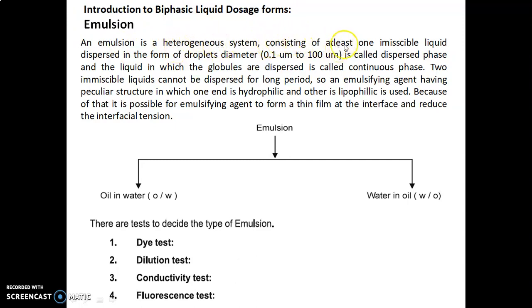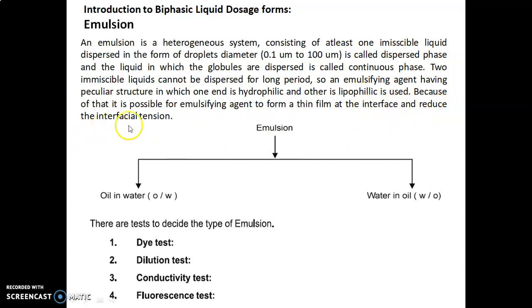An emulsion is a heterogeneous system consisting of at least one immiscible liquid dispersed in the form of droplets with a diameter of 0.1 micrometer to 200 micrometers, called the dispersed phase. The liquid in which the globules are dispersed is called the continuous phase. The two immiscible liquids cannot be dispersed for a long period, so an emulsifying agent — having one end hydrophilic and the other lipophilic — is used to form a thin film at the interface and reduce the interfacial tension.